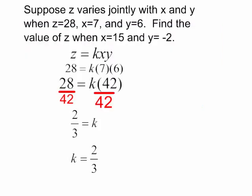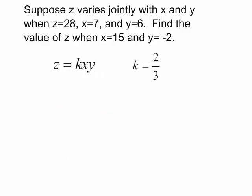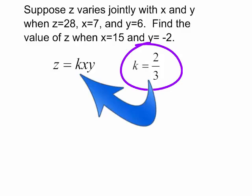Let's use this to solve the rest of the problem. We know that z varies jointly with x and y. So I have z is equal to k times x times y. We have found the constant of variation, the k, is equal to 2-3rds.